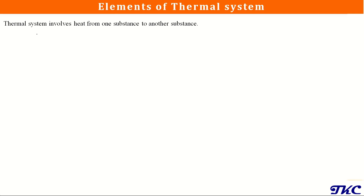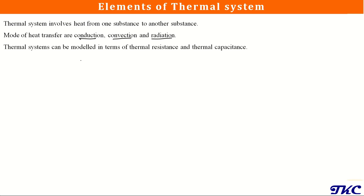We know that in thermal systems it involves the heat transfer from one substance to another substance. There are different modes of heat transfer: conduction, convection, and radiation. Whenever we want to model any thermal system we need to find two quantities — one is called thermal resistance and the second one is called thermal capacitance. These are two important quantities that we need to focus on.